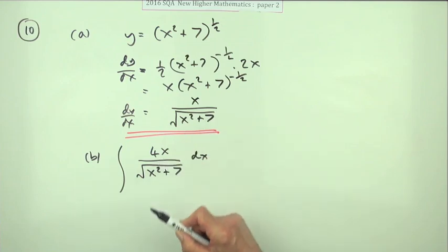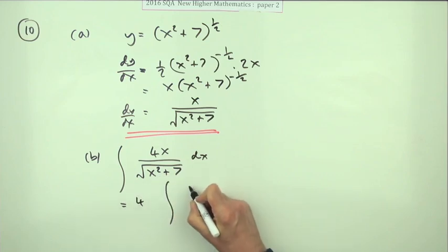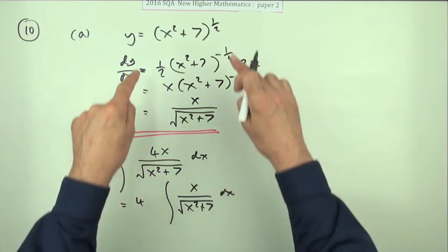and multiples just stay at the front, these coefficients, then that is essentially just 4 times the integral of the expression you've got here. So that integral must go back to this.